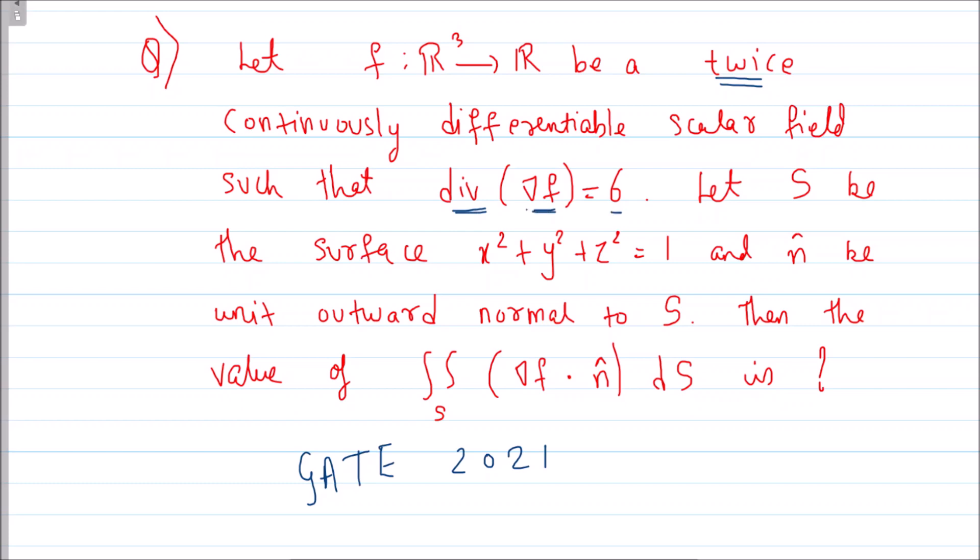So f is a scalar field. You take its gradient, you get a vector field. You take its divergence, you get a scalar function which is nothing but the constant function 6.